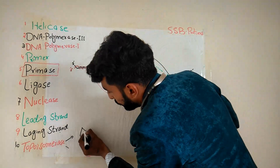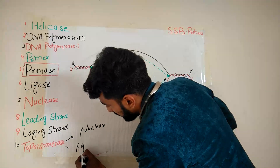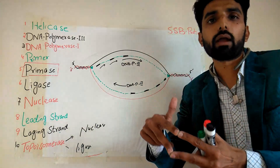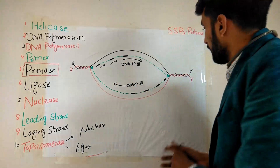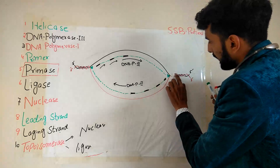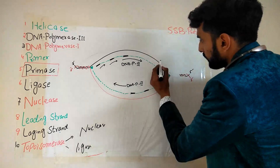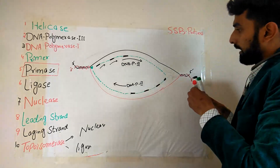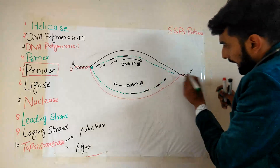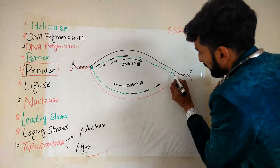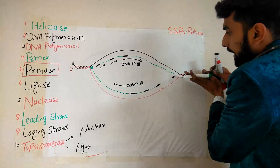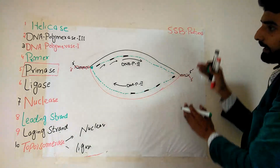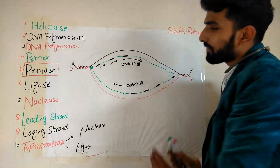Topoisomerase has two domains: nuclease and ligase. The nuclease domain cuts the phosphodiester bond, and after untwisting, the ligase domain joins them again so the DNA remains intact but the super twist is resolved. Now the helicase enzyme will be able to move further. Another primer will be added, primase and DNA polymerase 3 will start replication in the 3' to 5' direction, and this process continues until both strands are fully separated and two exact replicas are formed.